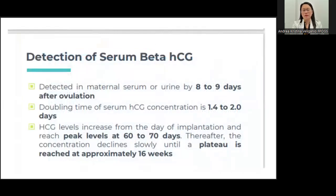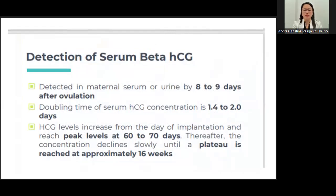For detection of beta-HCG, serum beta-HCG becomes positive in the urine at 8 to 9 days after ovulation. With ultrasound, there is a discriminatory level of around 1,000 to 2,000 for the beta-HCG. The value will double within 1.4 to 2 days, then it will peak at 60 to 70 days and plateau around 16 weeks.